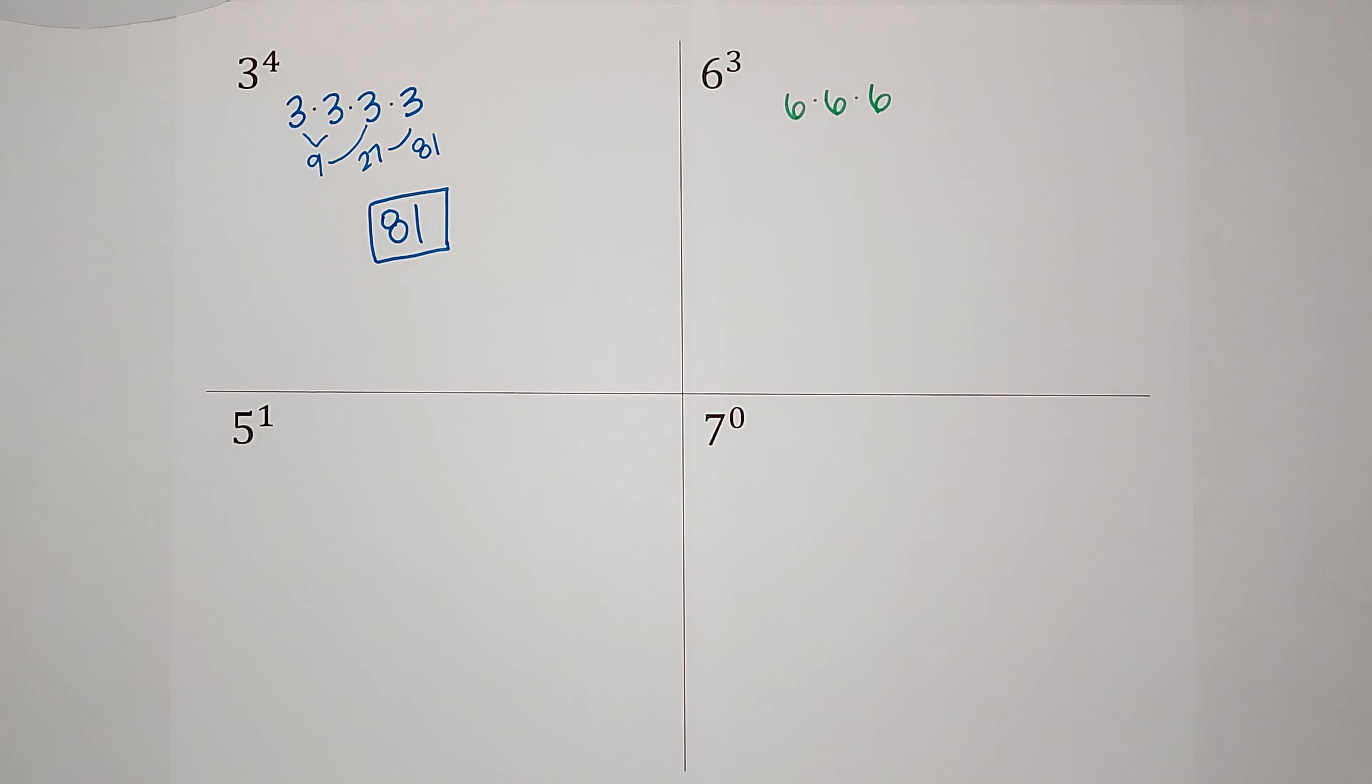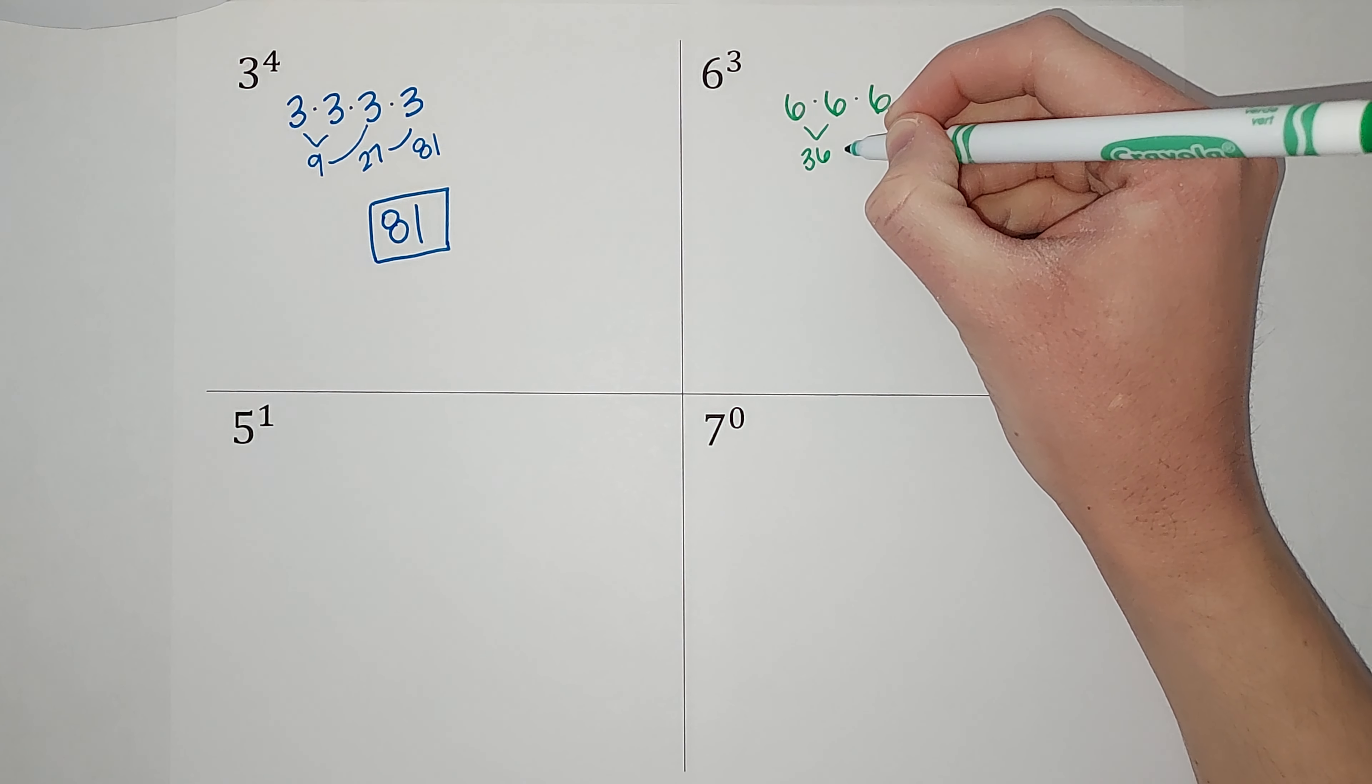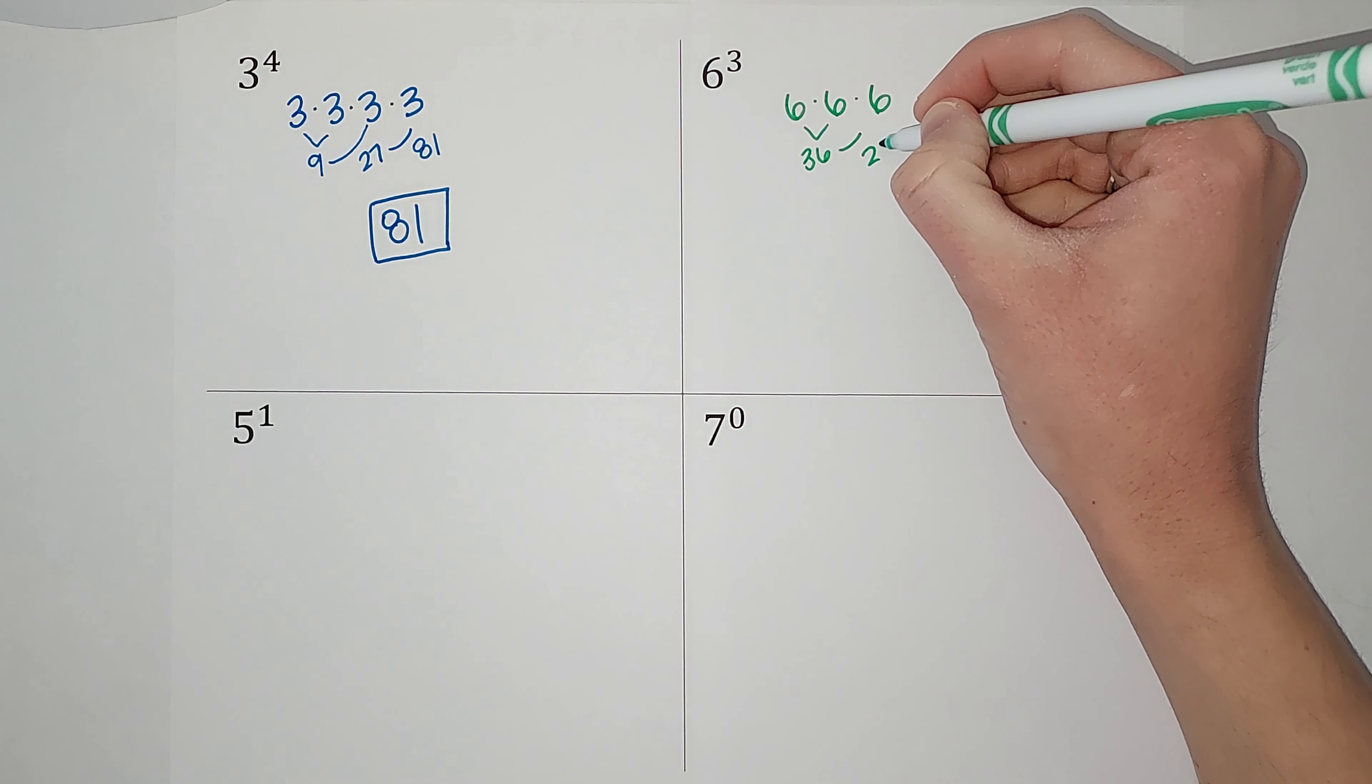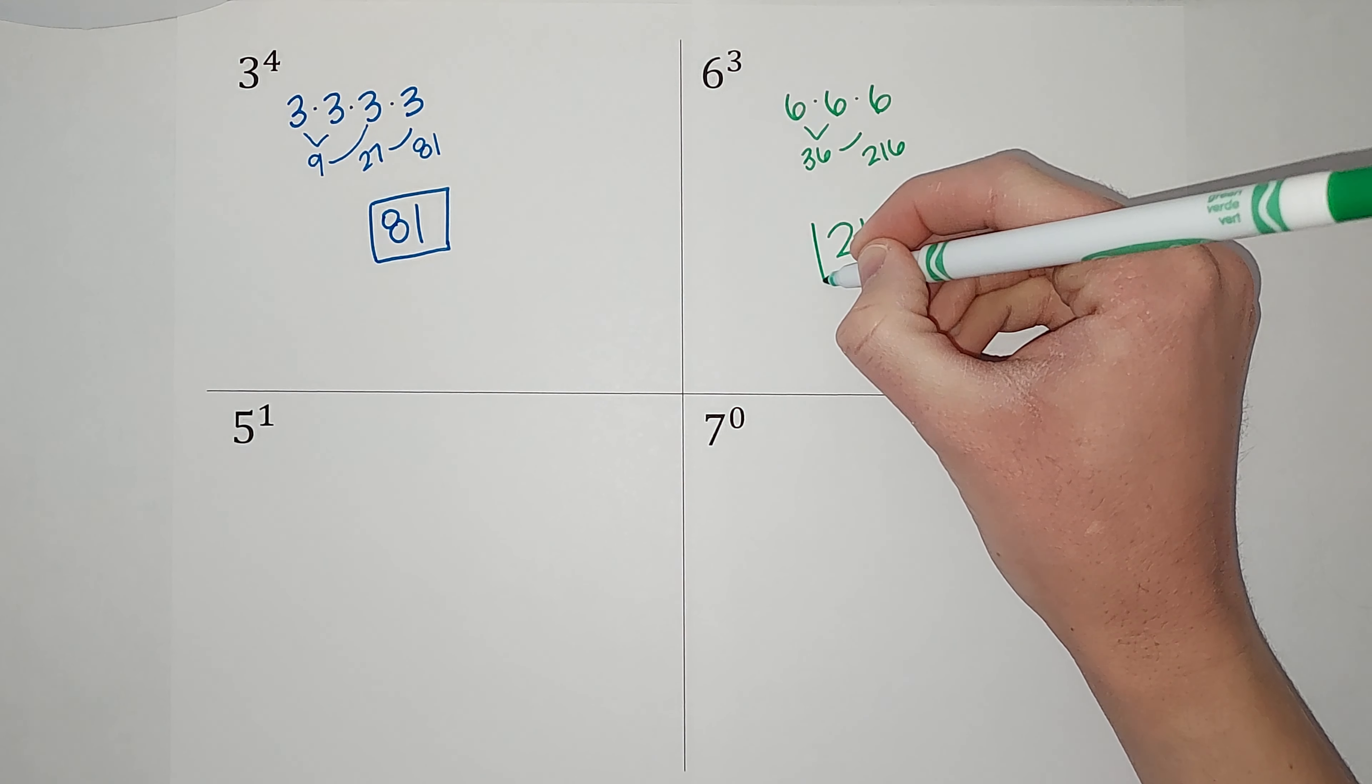So six times six is 36. 36 times six gives me 216. That's my answer. Like I said, exponents get big fast.